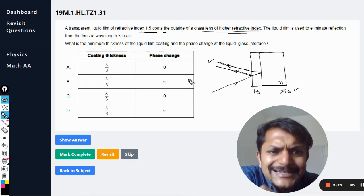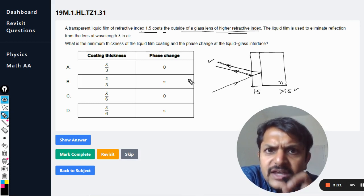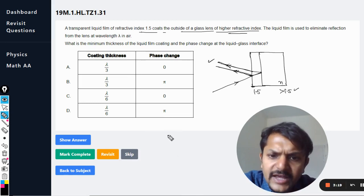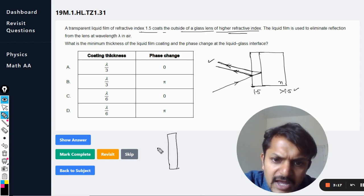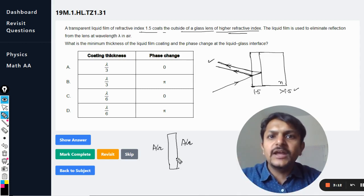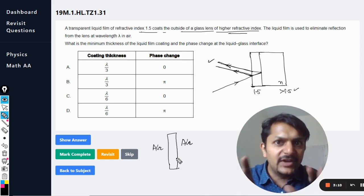But my dear student, this case is different from the earlier cases given earlier, like there is this film and it is surrounded by air on both of these sides. So on both of the sides you are having a medium of the lesser refractive index.